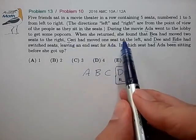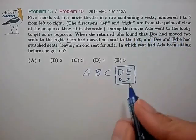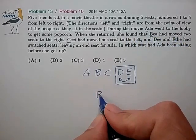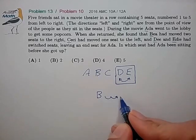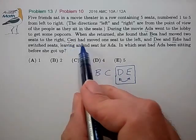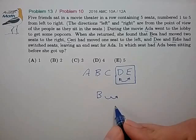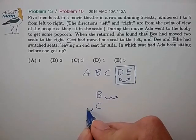And I notice here that B had moved two seats to the right. So I would write B and just a little symbol here that she went two seats to the right. C had moved one seat to the left. So I write C one seat to the left.